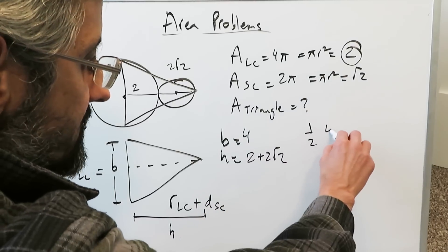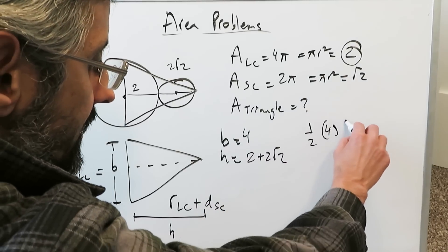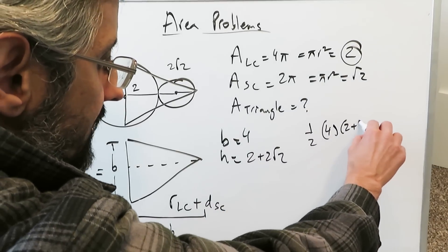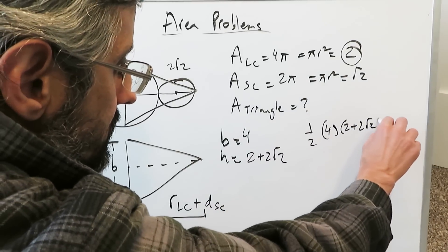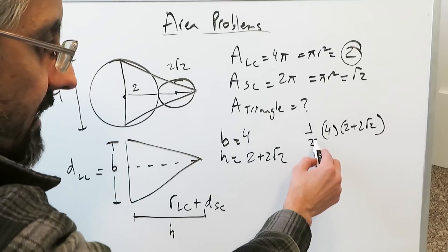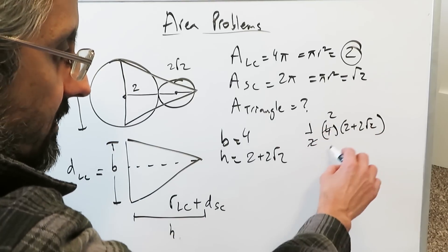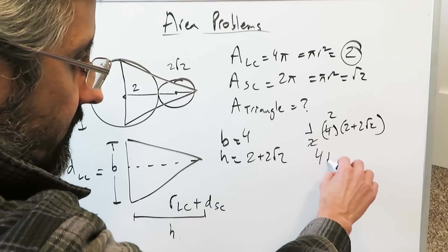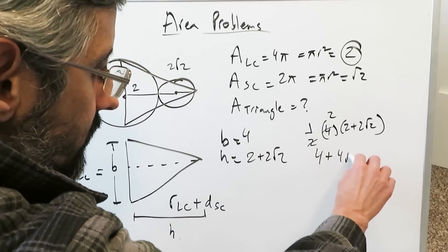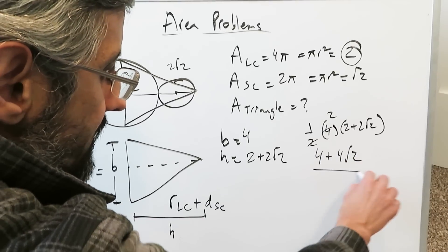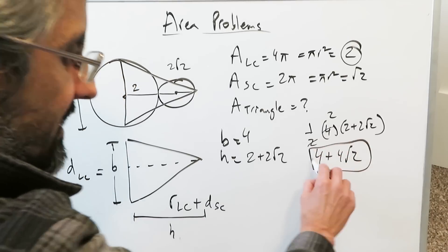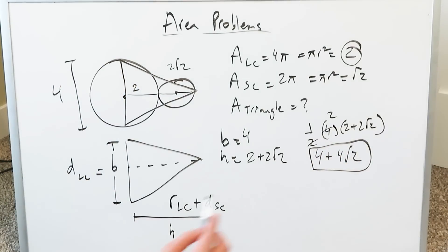Let's do the area of the triangle computation: ½ times base times height gives us ½ × 4 × (2 + 2√2). Cancel the ½ with the 4, and multiply across — you get 4 + 4√2. That is the area of the triangle, and the question has been solved.